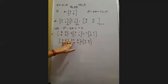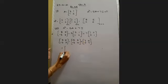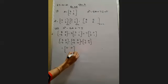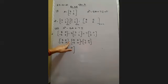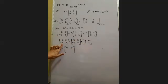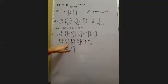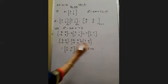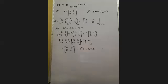Evaluating element by element: 8 − 15 + 7 = 0, minus 5 + 5 + 0 = 0, 5 − 5 + 0 = 0, 3 − 10 + 7 = 0. So the result is the null matrix. This is proved.